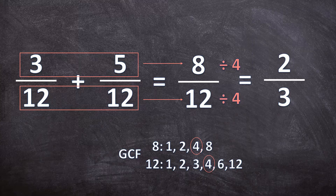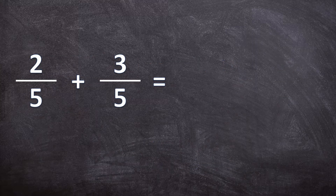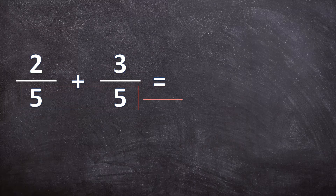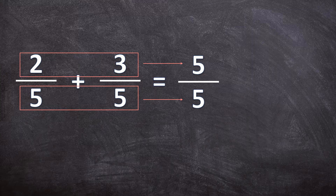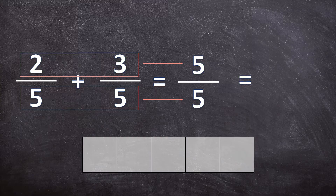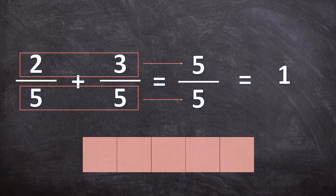Let's look at one more example that ends differently. Here we have 2 over 5 plus 3 over 5. Our denominators are the same, so the denominator in the answer is 5. Adding the numerators gives us 5, so we have 5 over 5. Let's draw a rectangle divided into 5 pieces and color in all 5 — I've colored in the whole rectangle. So 5 over 5 simplified is 1 whole. When the numerator and the denominator have the same value, it is equal to a whole.